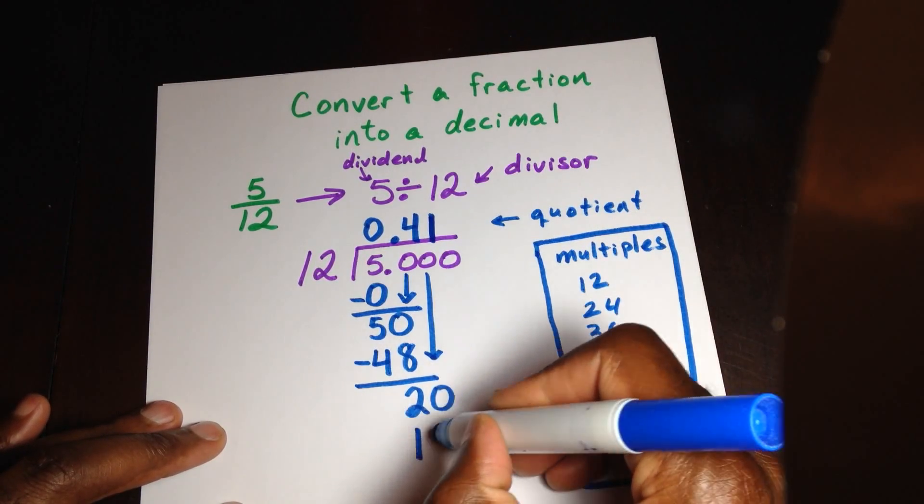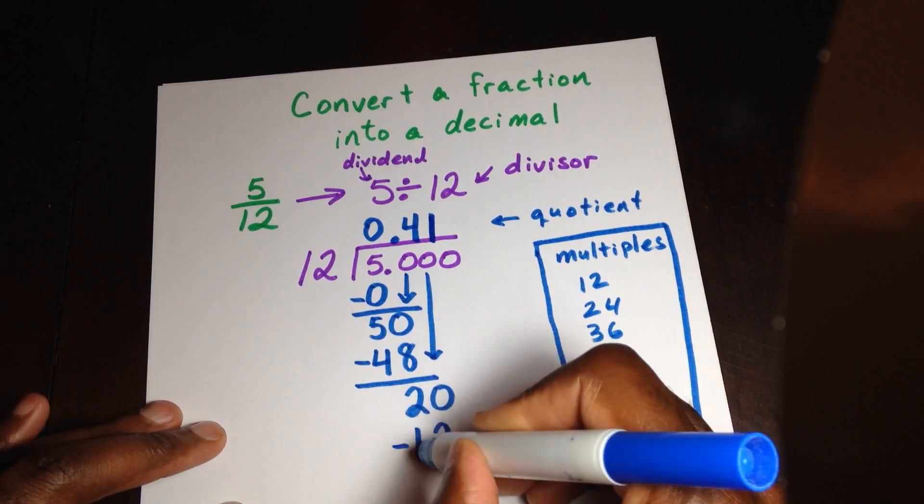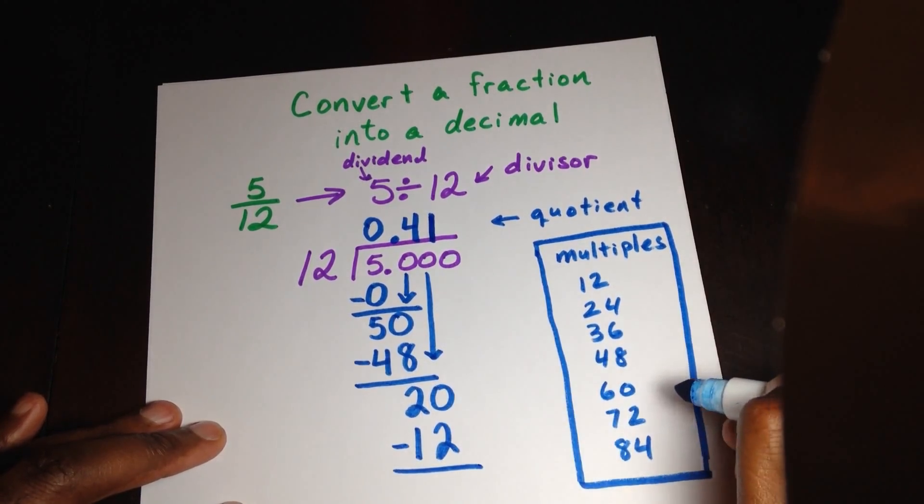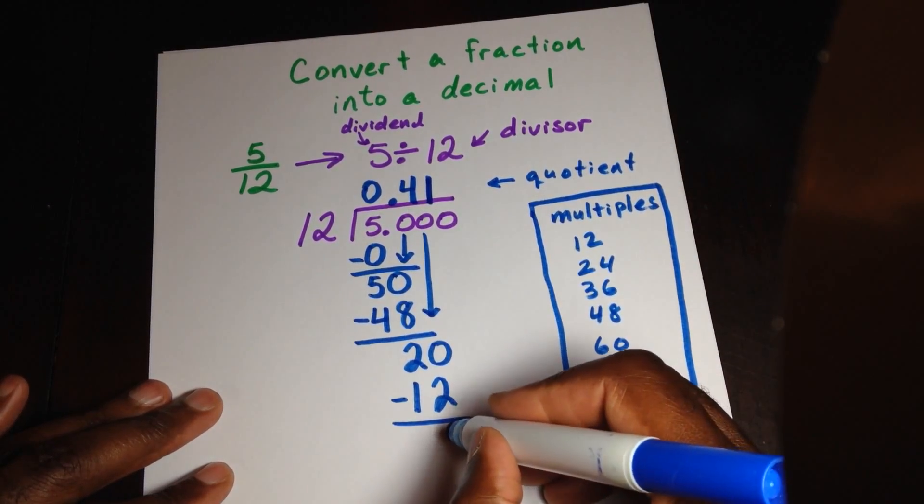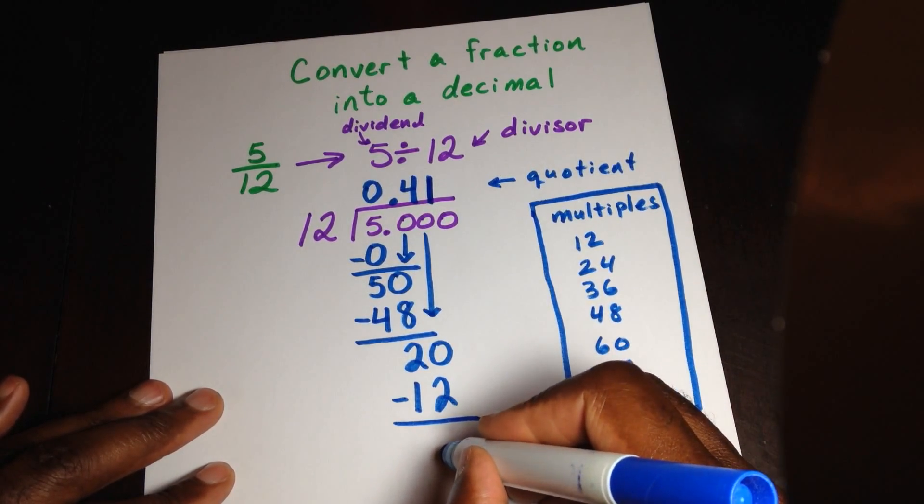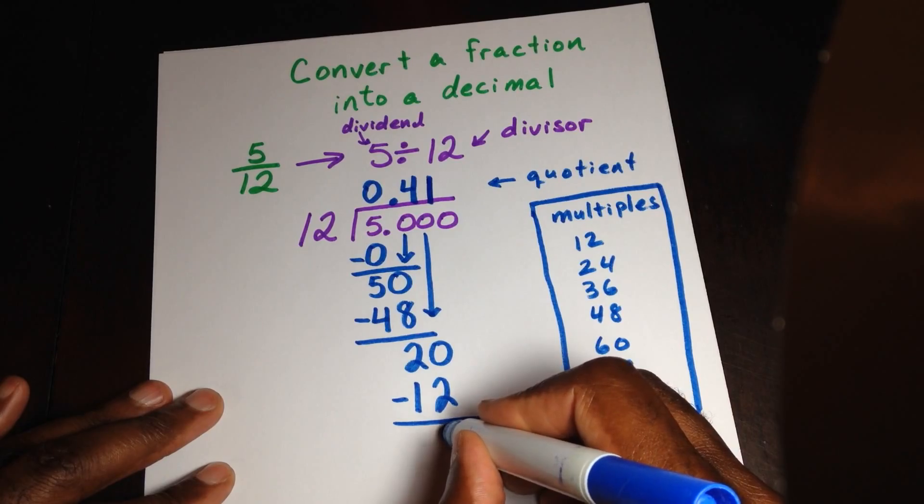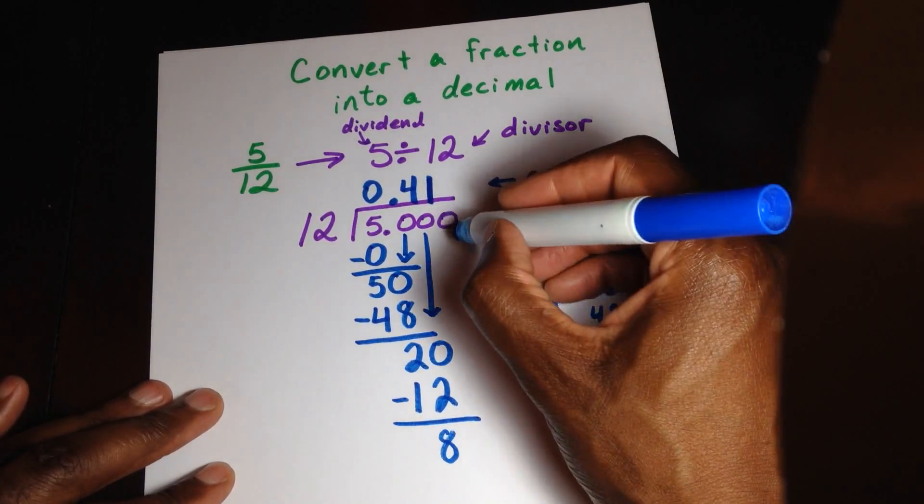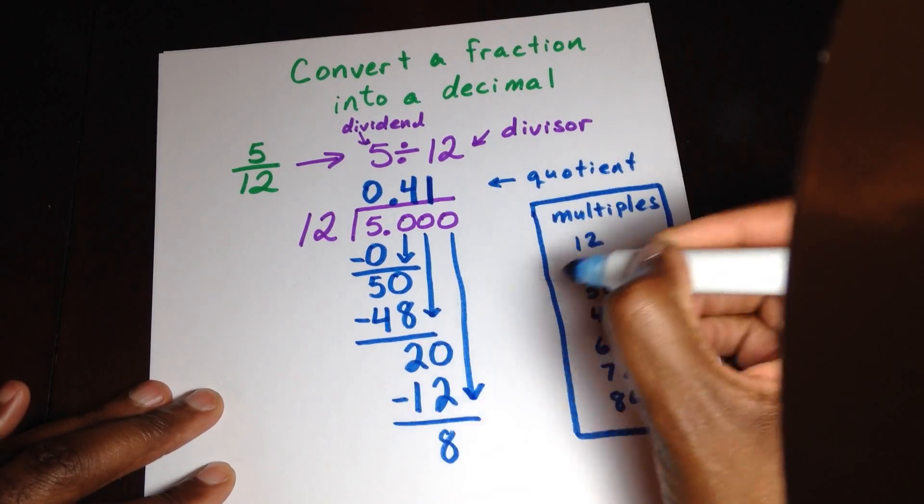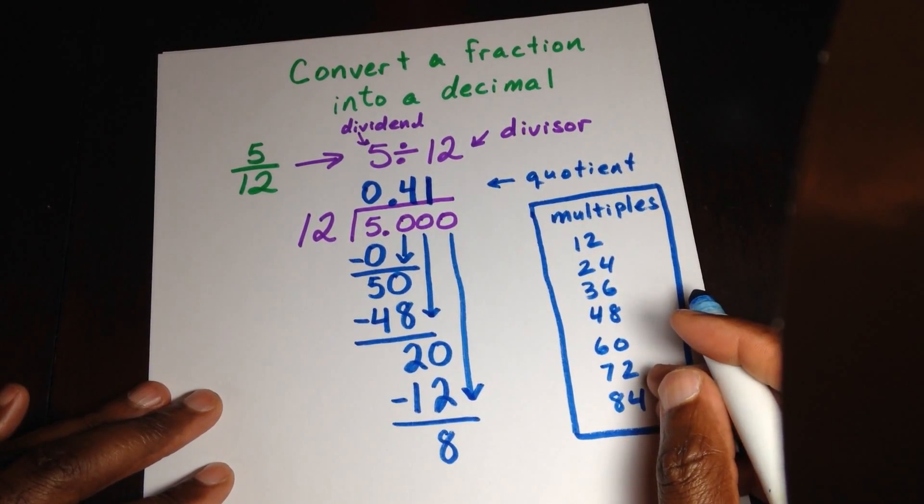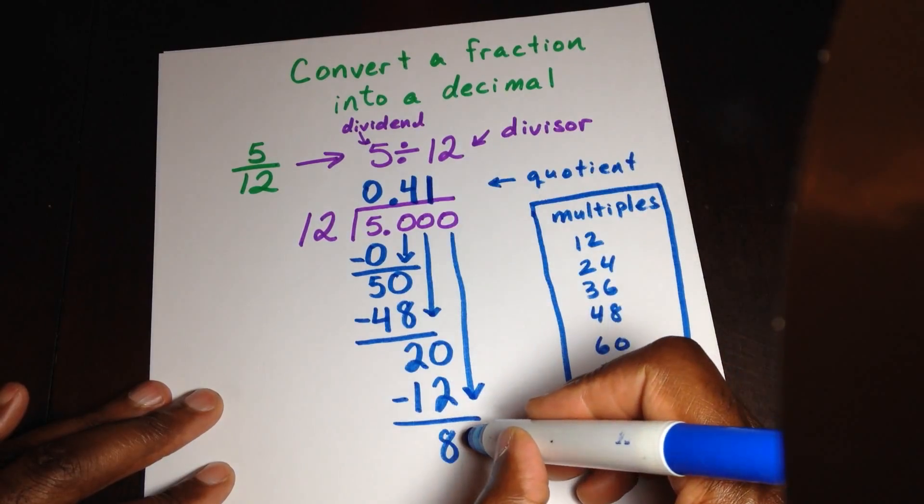And now 1 times 12 is what gives me 12. So I do 20, take away 12, and I get 8. So now I'll bring down the next 0. Again, I'm keeping everything organized, nice and neat. Very important. And I bring the 0 here.